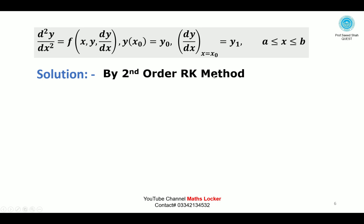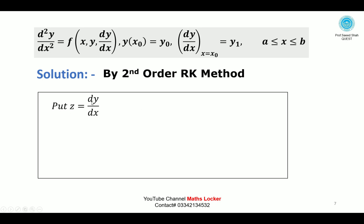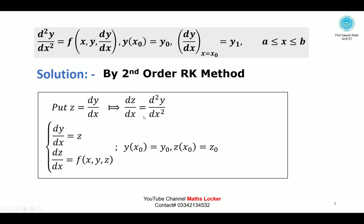Solution by second order RK method. Let z = dy/dx, so differentiating gives dz/dx = d²y/dx². In place of d²y/dx² we place dz/dx, which is f(x, y). In place of dy/dx we put z, so the first equation comes from the substitution, and the second equation comes from the given problem.